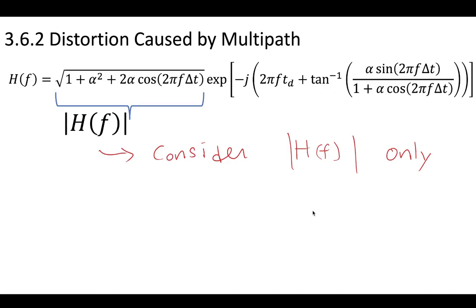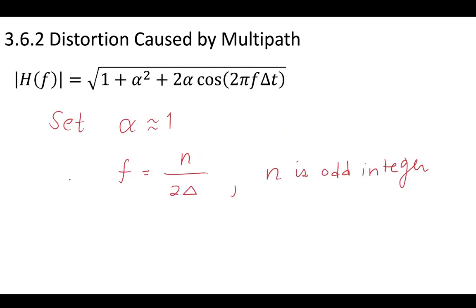So to do this, let's consider just the amplitude response of the transfer function. And when we do this, let's consider that the gain, that alpha gain, that is the gain of the path that might have some reflections, let's say that it's really close to 1. It might not be 1, it's not our unity gain, but it's pretty close to 1. So let's say that our gain in the non-ideal path that bounces off the building, that's almost 1.